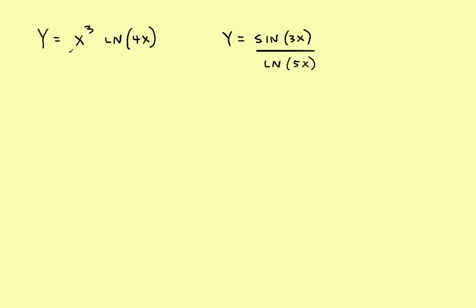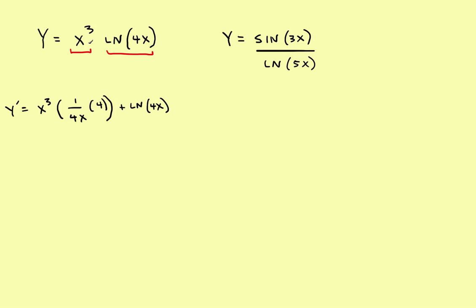Now let's look at the product rule. If you have something like x cubed times the natural log of 4x, you've got a first thing times a second thing. So y prime equals the original first times the derivative of the second — which is 1 over the argument times the derivative of the argument — plus the original second, the natural log of 4x, times the derivative of the first using the power rule, which is 3x squared.